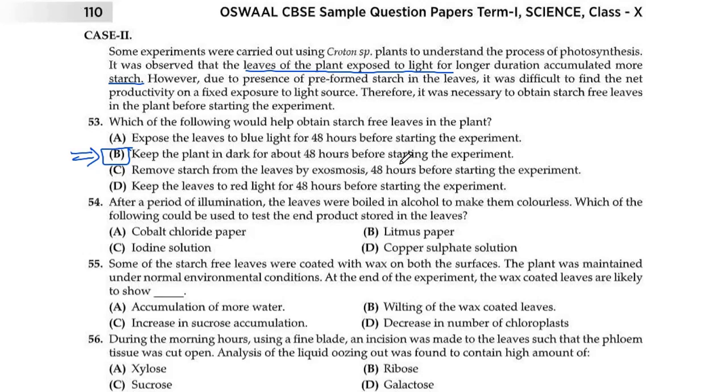Question 54: After a period of illumination, the leaves were boiled in alcohol to make them colorless. Which of the following could be used to test the end product stored in the leaves? If we want to know about starch, it will be tested with the help of iodine solution, which gives a blue-black color. You should know this.